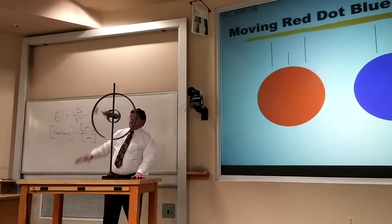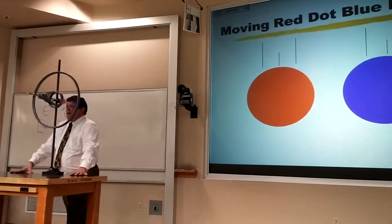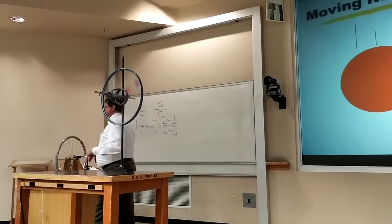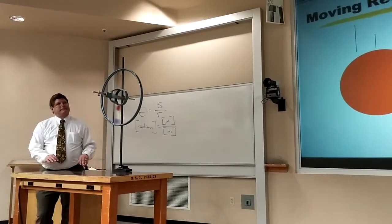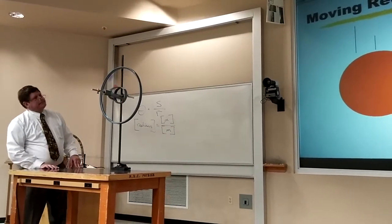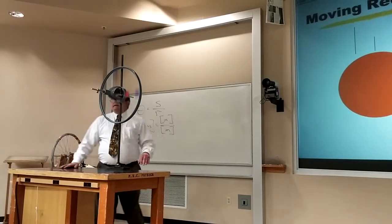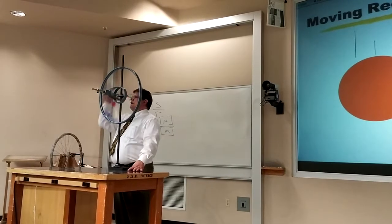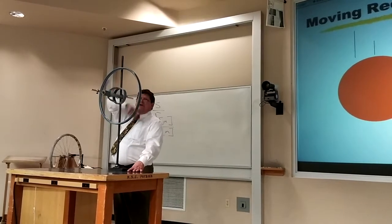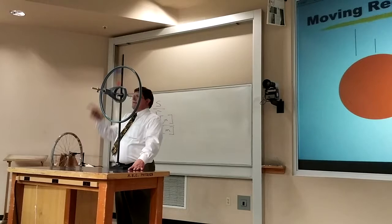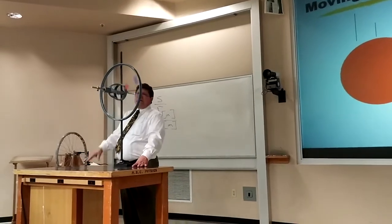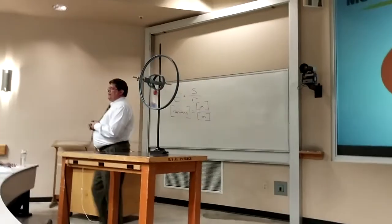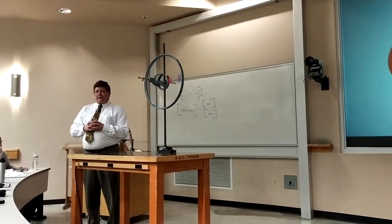If I spin that wheel, which dot is moving fastest, the blue one or the red one? Well, if we're talking about linear motion, the blue one has to go around a bigger circle in the same amount of time that the red one goes around a little circle. So, linearly speaking, the blue one is traveling a lot faster.